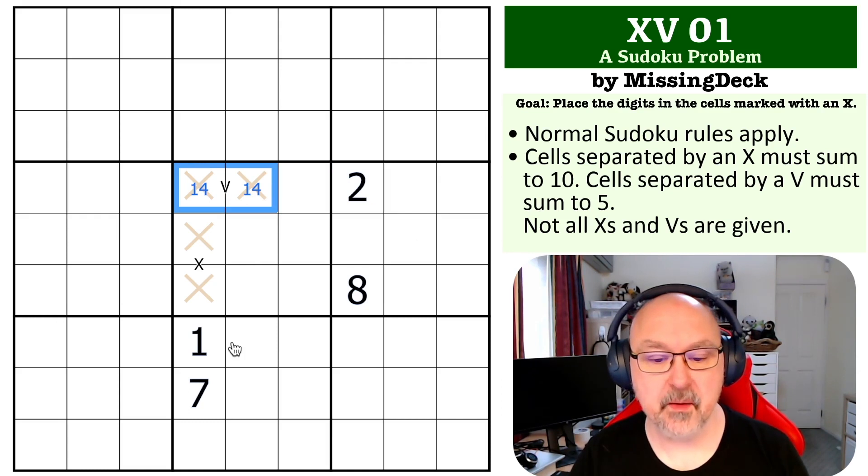So this must be 1, 4. However, there's a 1 looking up. So this becomes a 4 and this becomes a 1. Nice and simple.